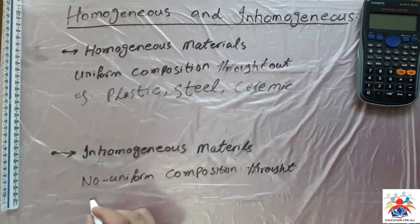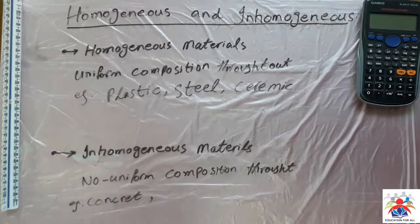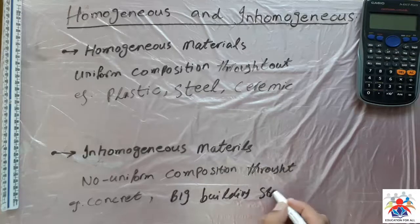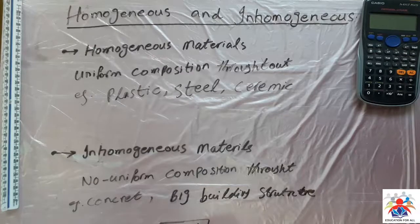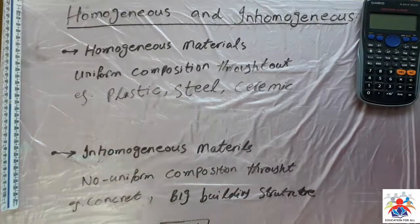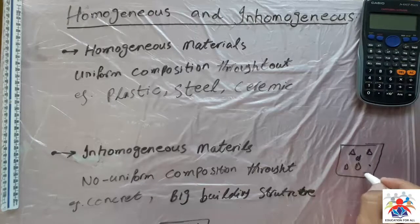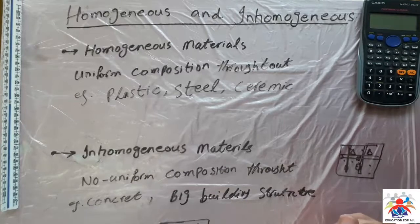For example, we have concrete. In concrete you have bigger particles, then you have smaller particles, and then obviously you may have steel bars, longitudinally or horizontally. This is made out of different materials, that's why it is inhomogeneous.